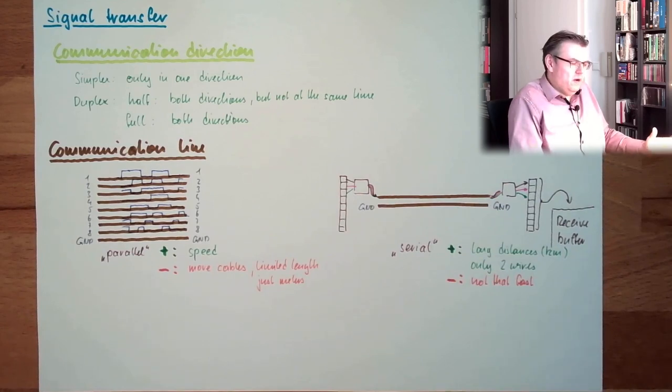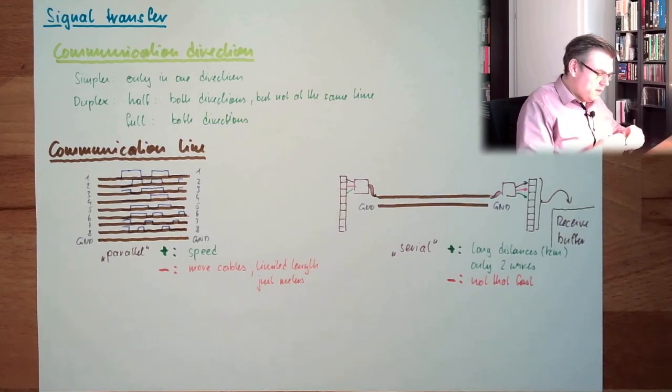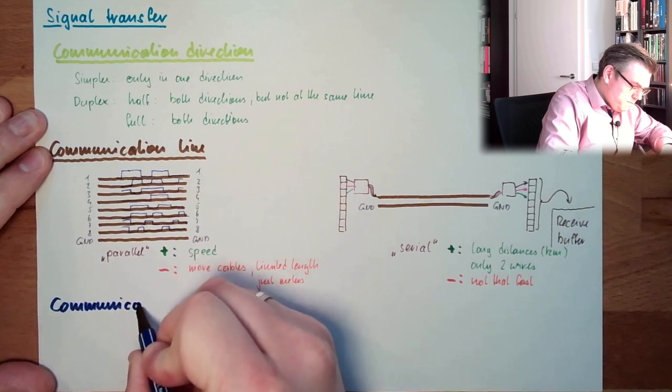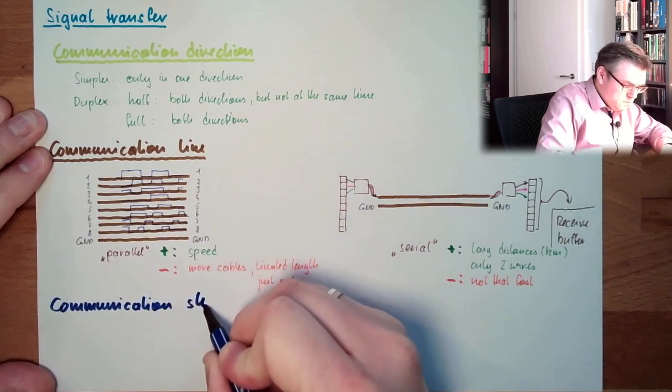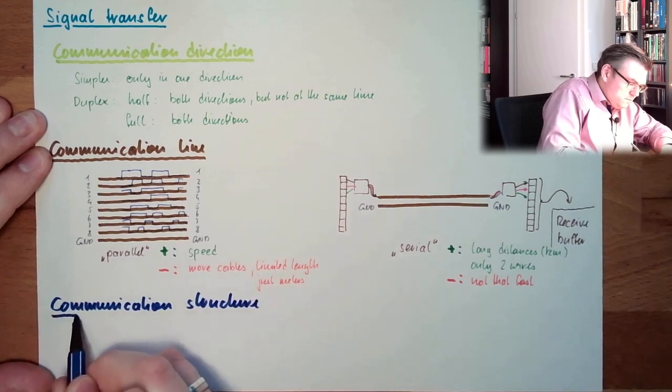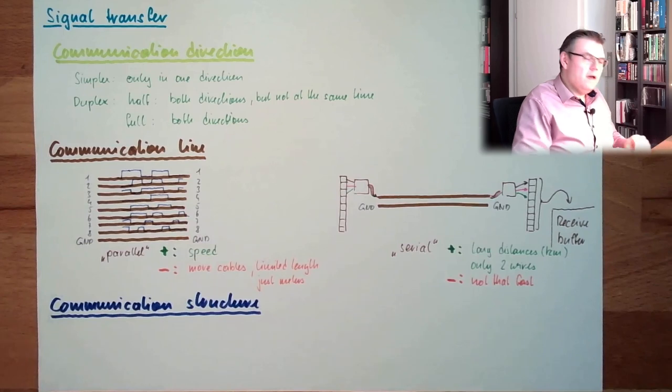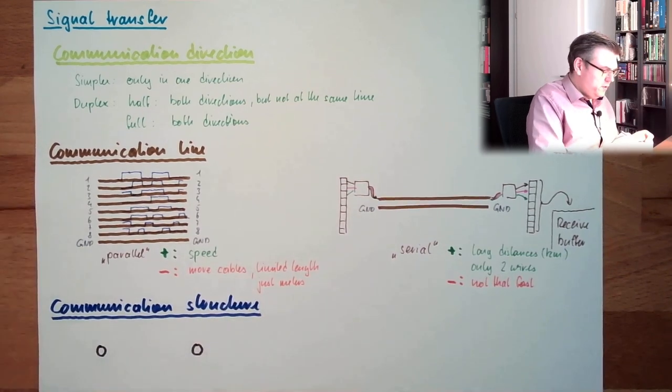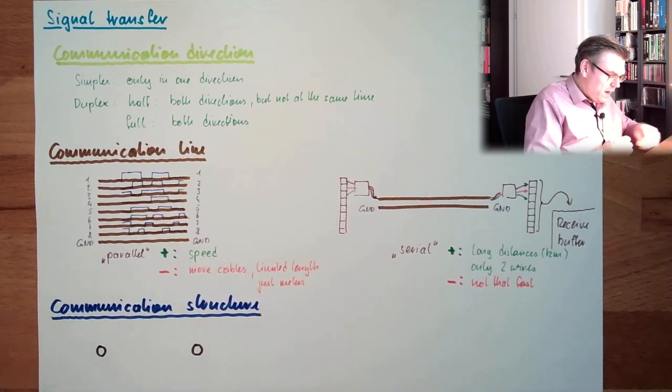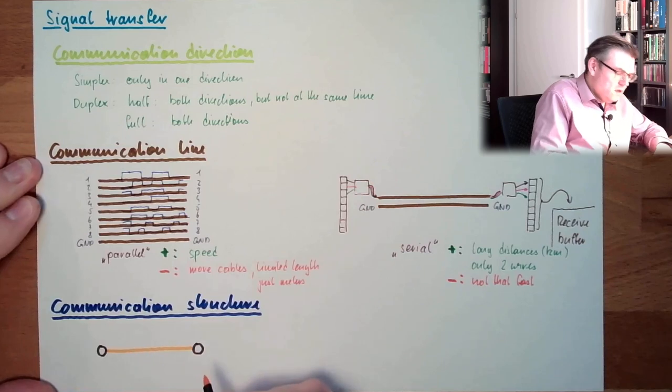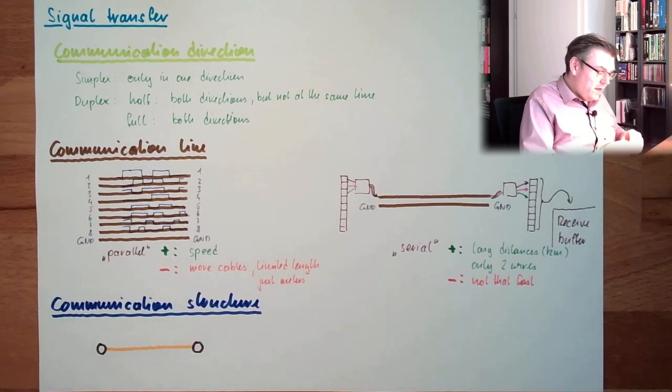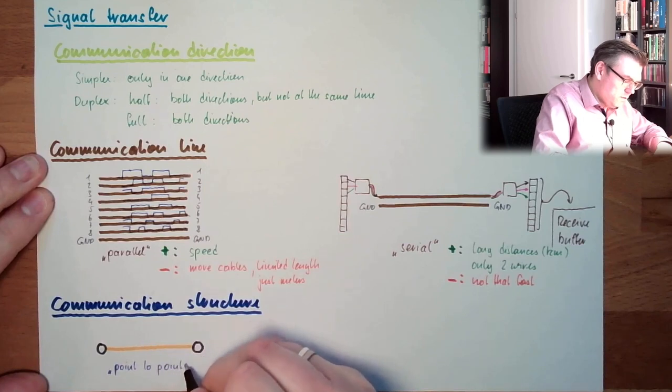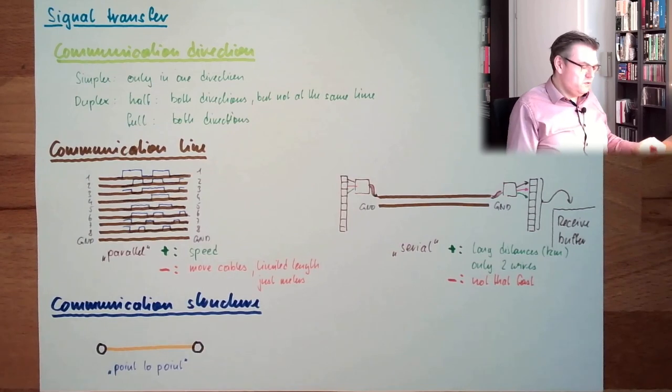Bus. They already said something. What is a bus? Communication structure is also a topic. It might be the case that we have two stations who want to talk to each other, and only those two stations are involved. So I have one single connection between those two stations. And such a connection is called point to point.